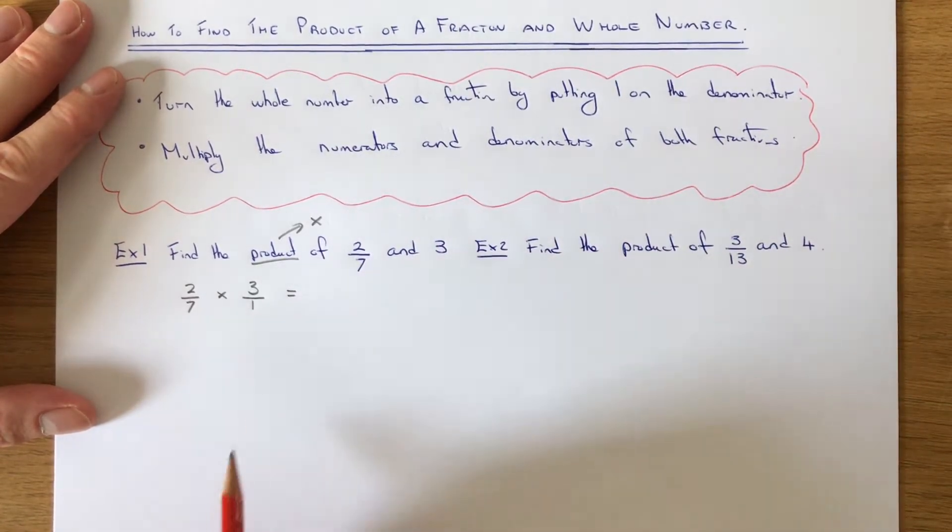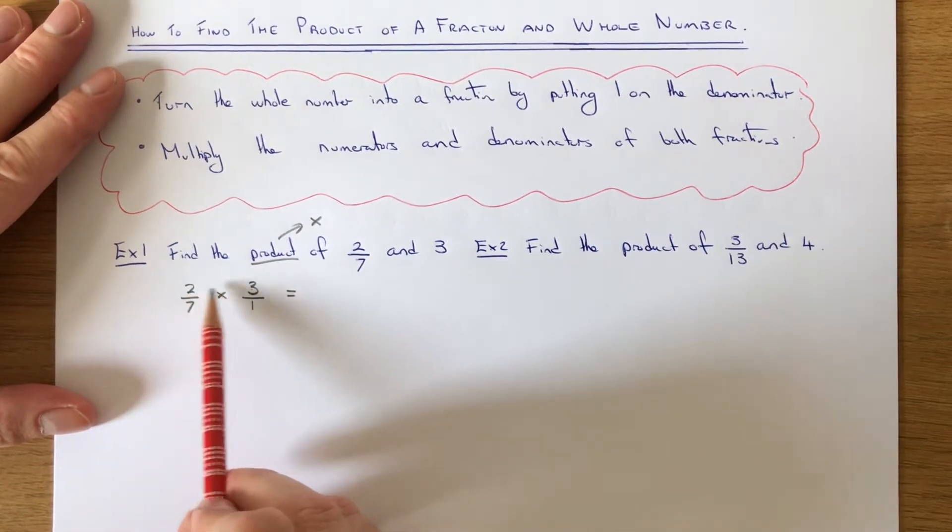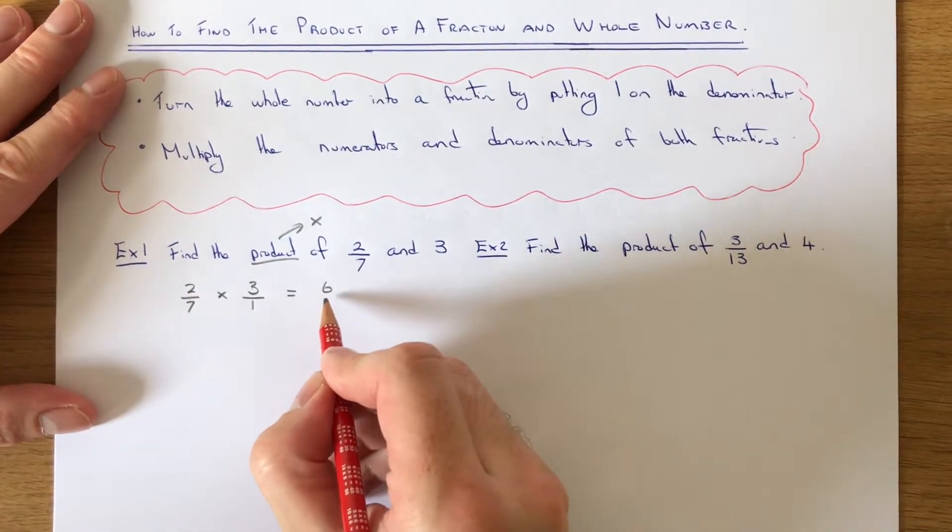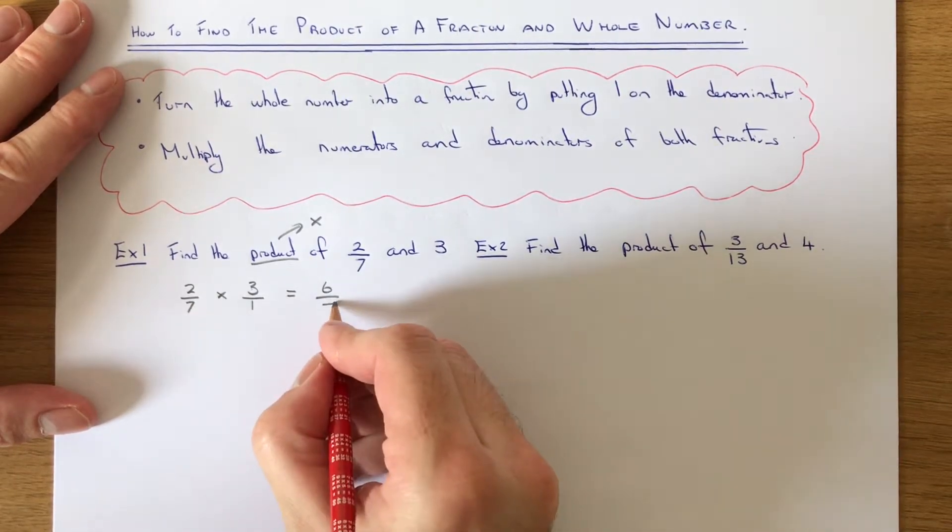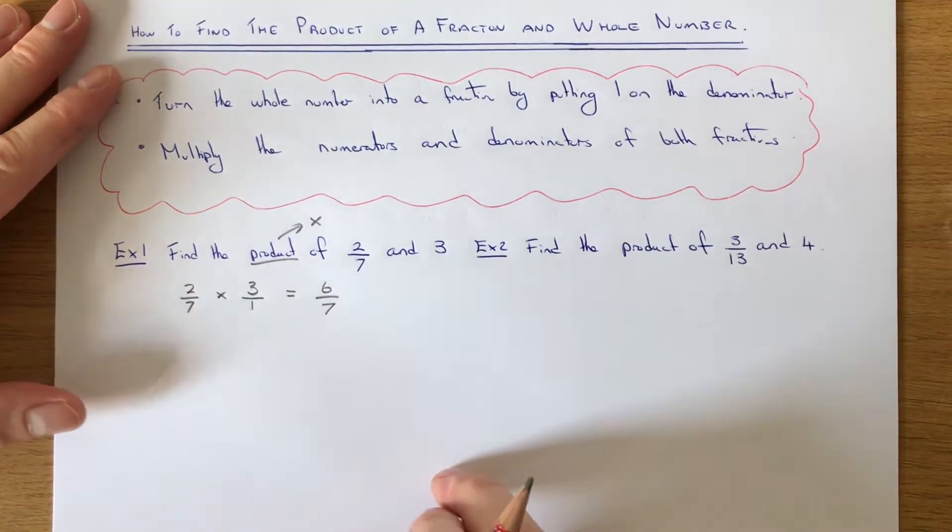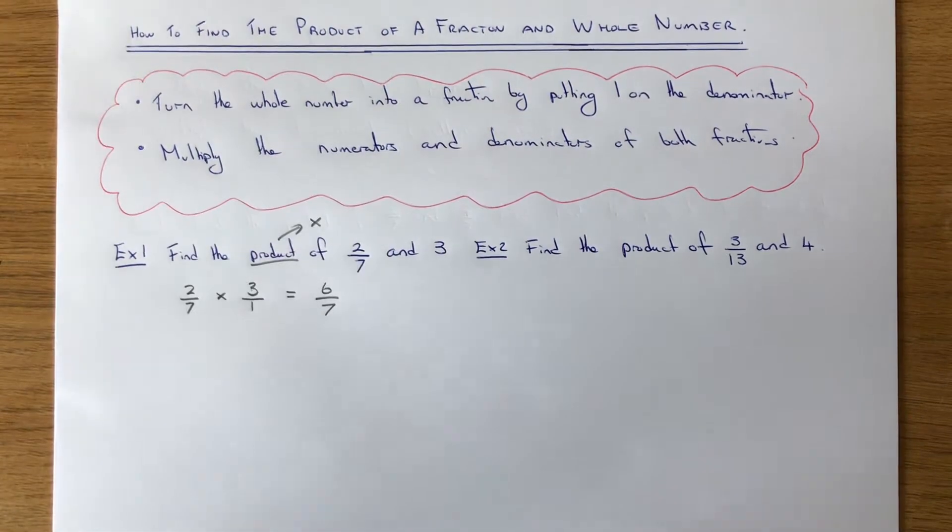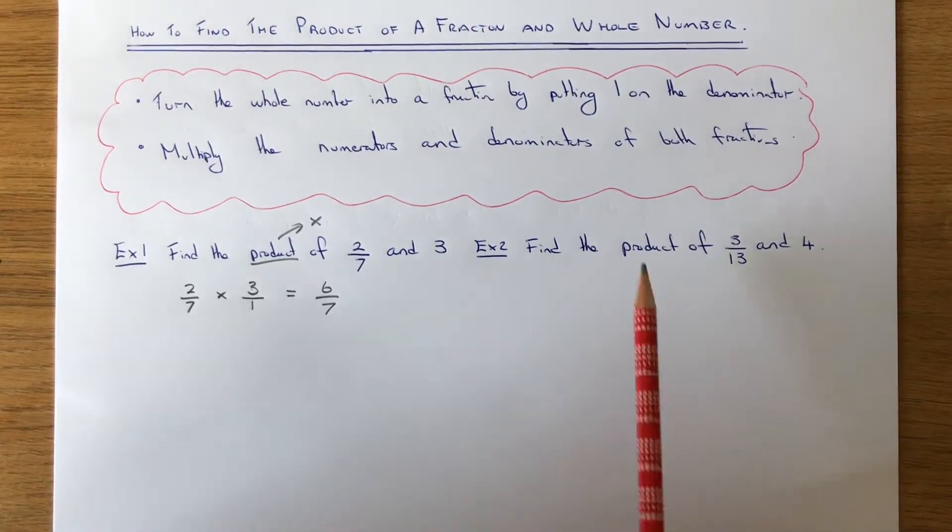Once we've done this, we can multiply the numerators. 2 times 3 is 6, and multiply the denominators. 7 times 1 is 7. We get an answer of 6/7. Let's move on to example 2.